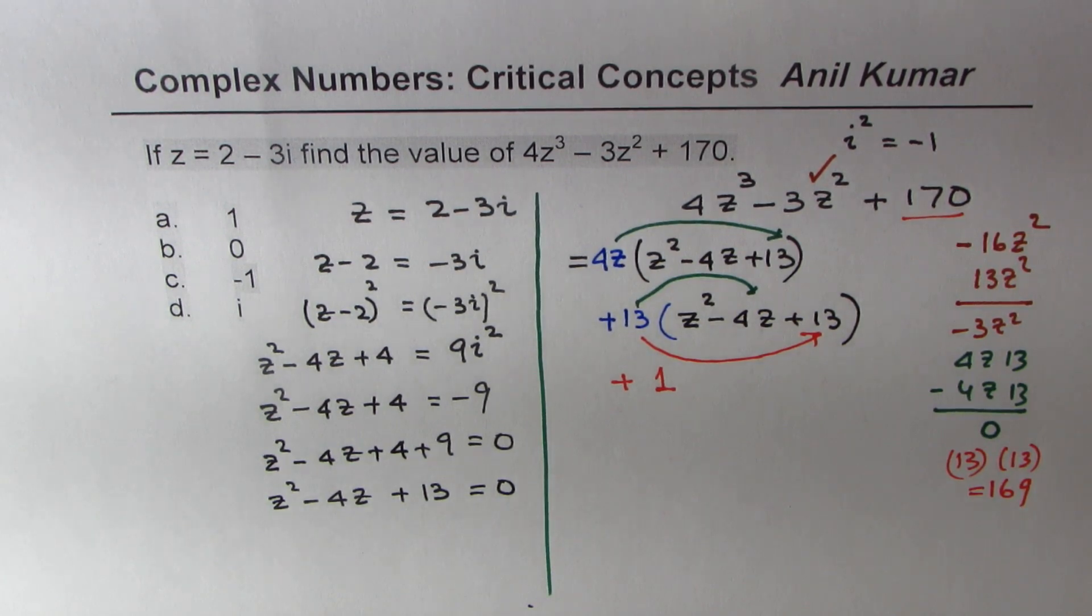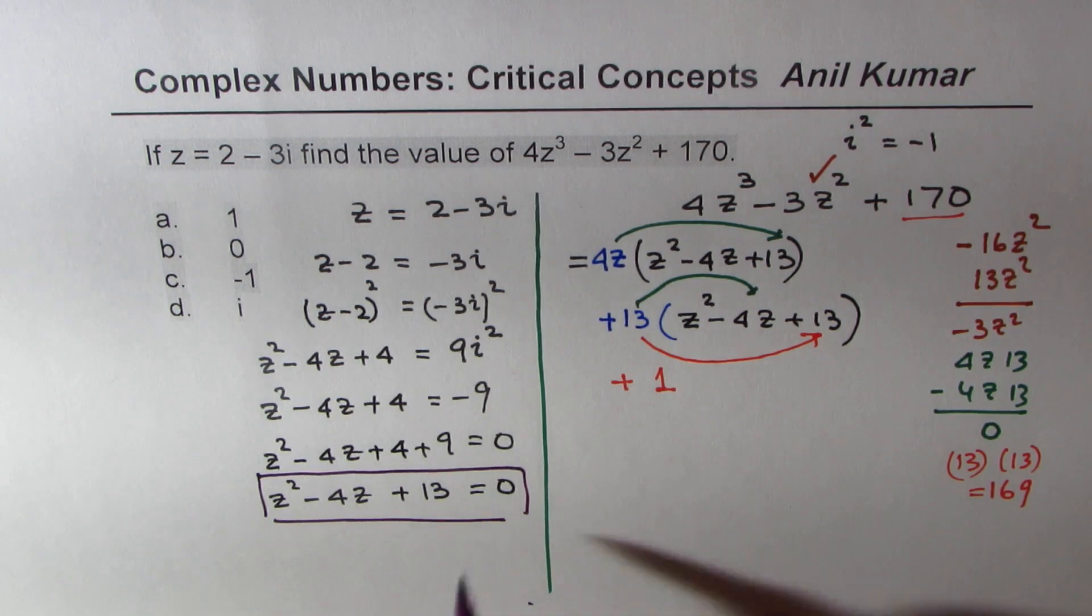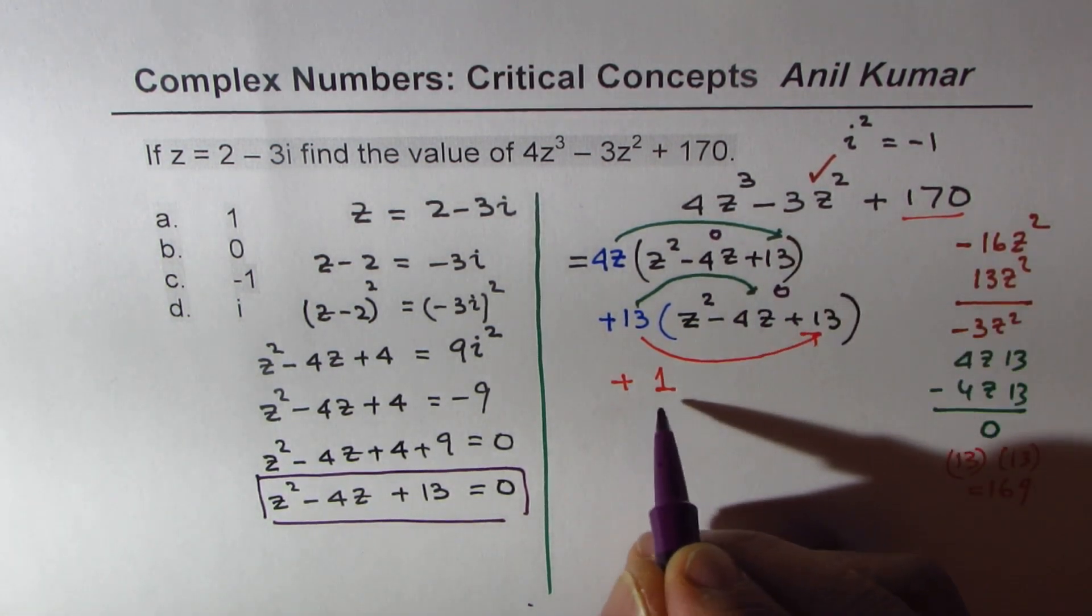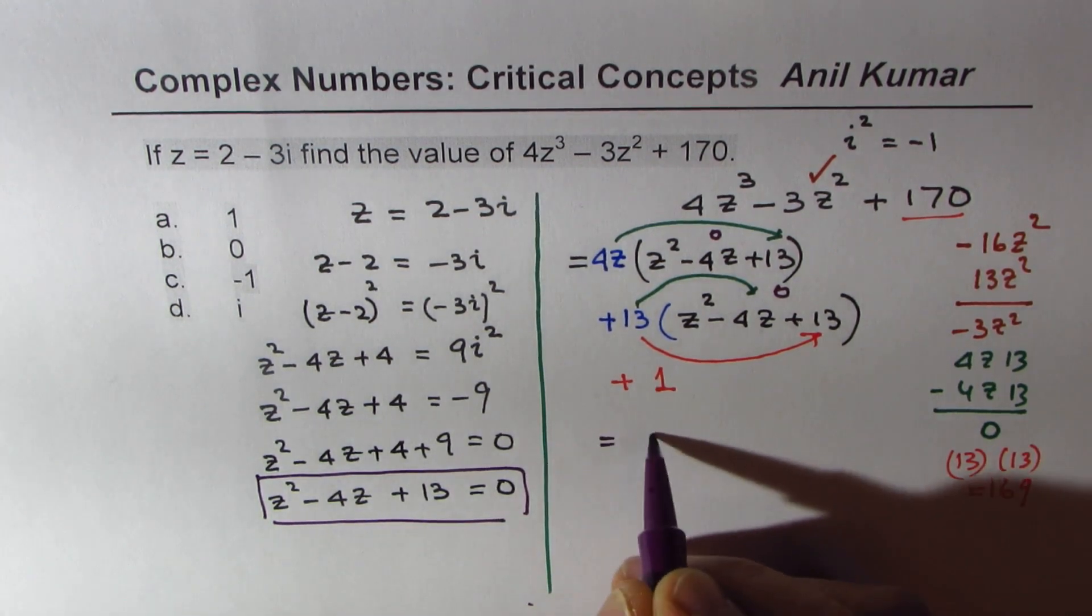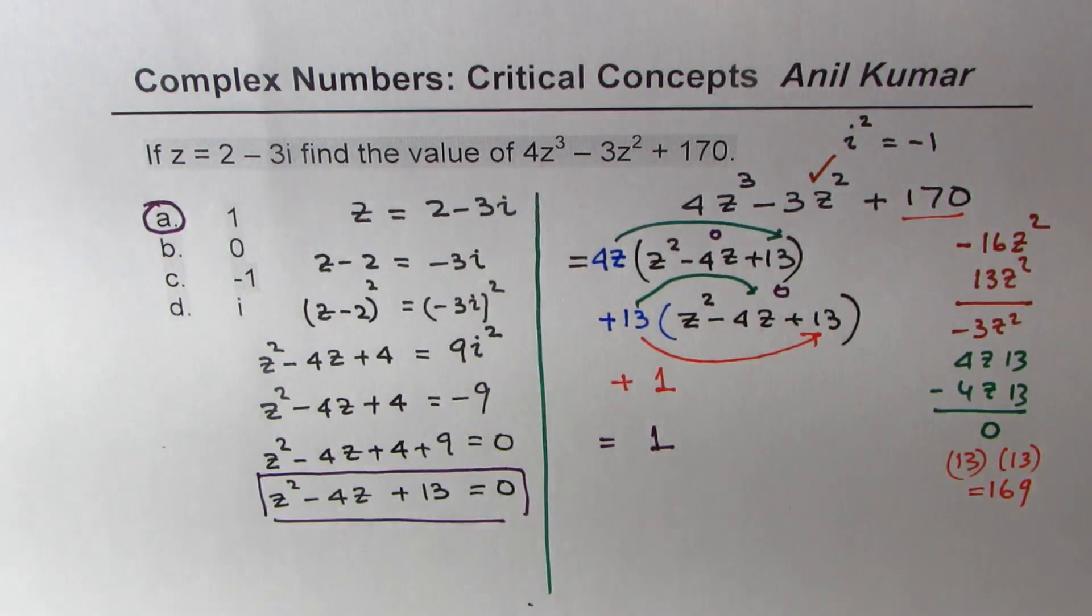So all these are 0. This is 0, this is 0. So we are left with only 1. So what we get here is plus 1, and so option a is the right option. You understand the concept? Go through this concept. That's a beautiful technique of finding exact value of a polynomial.